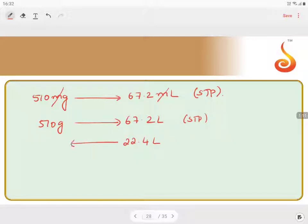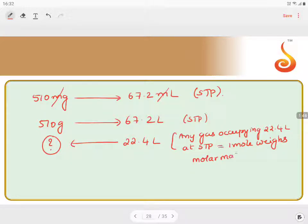Since we know the factor, any gas occupying 22.4 liters at STP is equals to 1 mole, which weighs molar mass in grams.